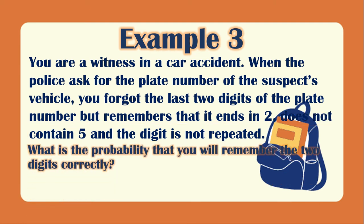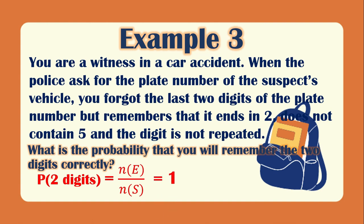What is the probability that you will remember the 2 digits correctly? The favorable outcome is 1, because there is only one correct combination, over the total of 8. So there is a 1/8 chance of getting the correct digits.